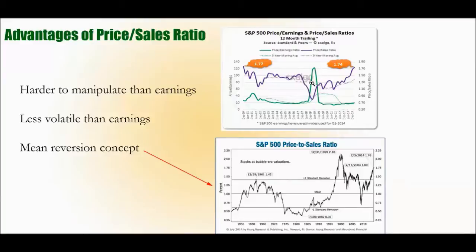You can see that in this chart here — the purple line is price-sales and the green line is price-earnings. You see price-earnings had a huge spike right before the crash in 2008. Price-sales also had a big move at that time, however in general the line has been a bit more stable, with less volatility.